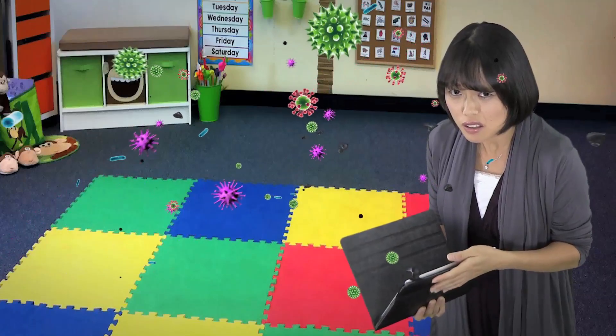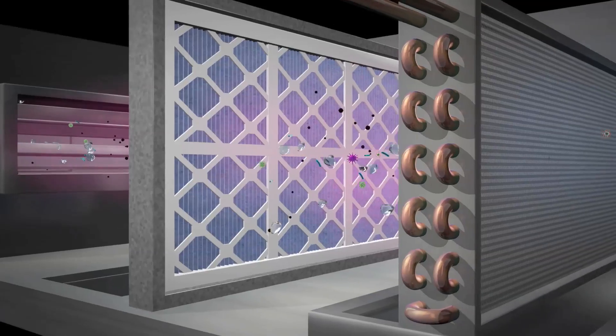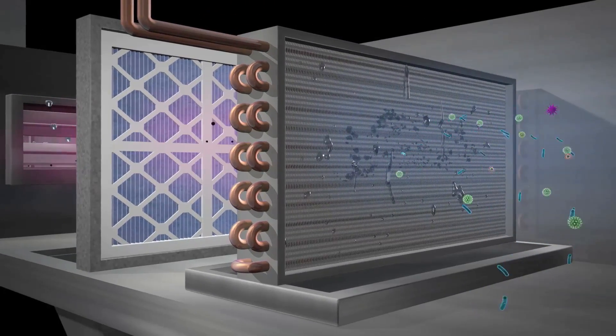Fourth, the mold that grows in the coil becomes an anchor or biological primer. This allows the dirt that passes through the filters to stick to the coil fins.